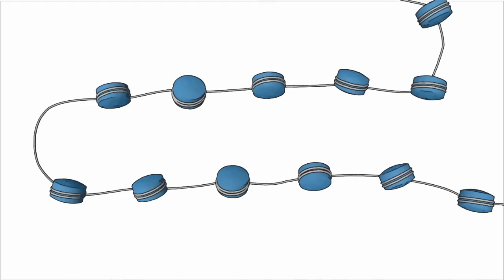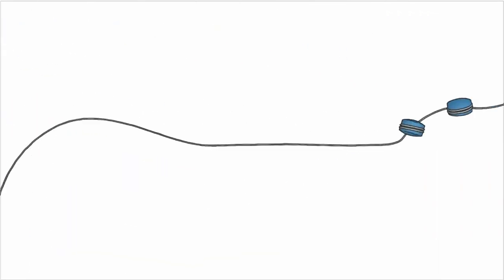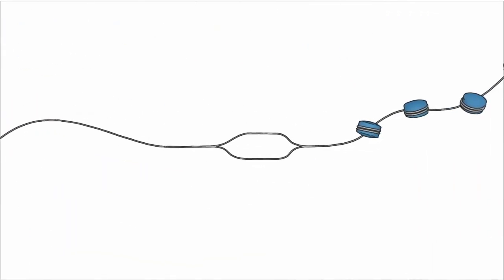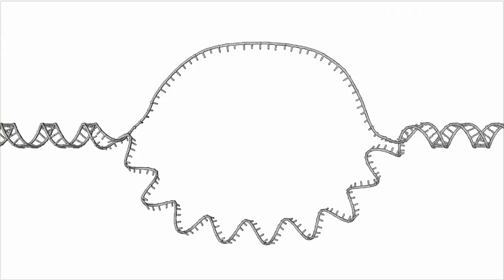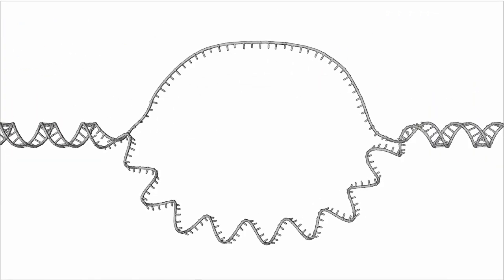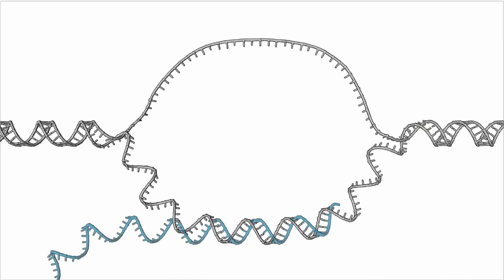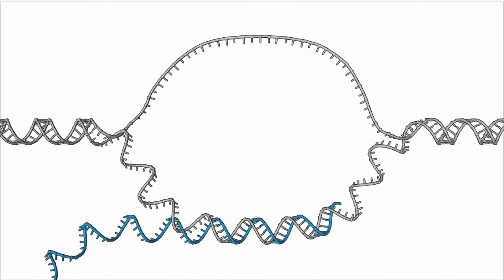The epigenome serves as a control system that influences when and how genes are turned on and off, and it can have a significant impact on an organism's development, health, and disease risk.